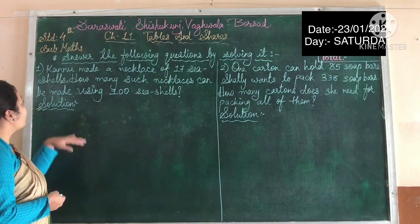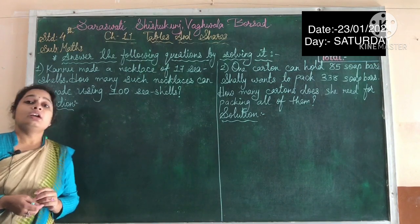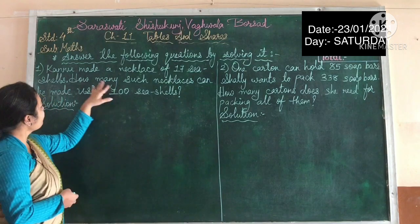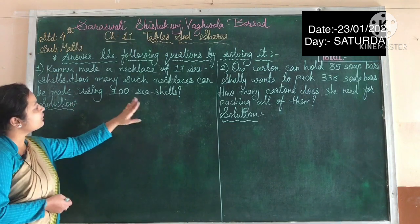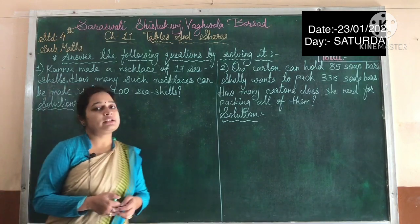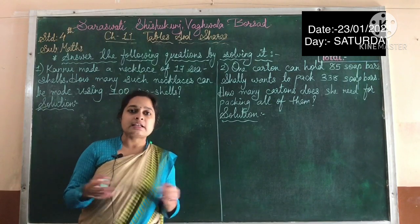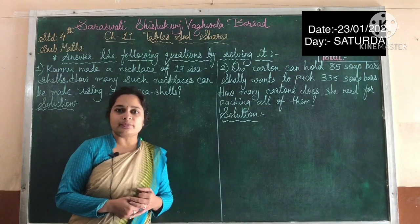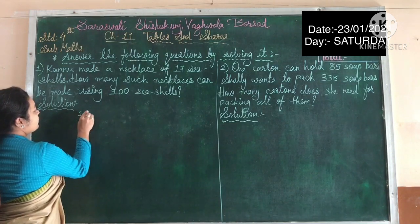The first word problem is: Kanu made a necklace using 17 shells. Kanu used 17 shells in one necklace. How many such necklaces can be made using 100 shells? He is having 100 shells and wants to make necklaces, using 17 shells in each. So let us find out using the repeated subtraction method of division.